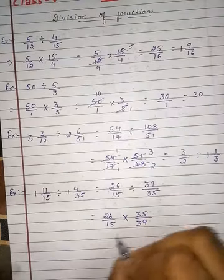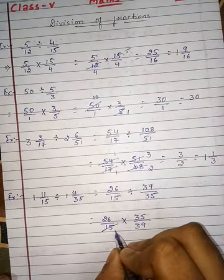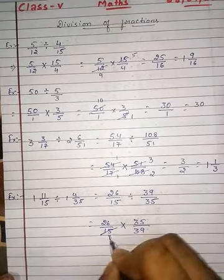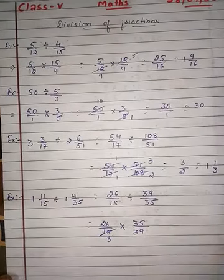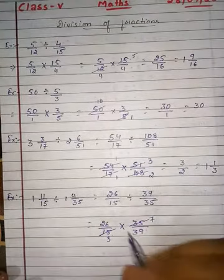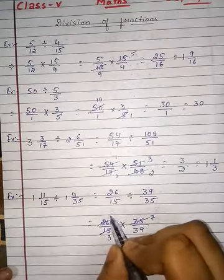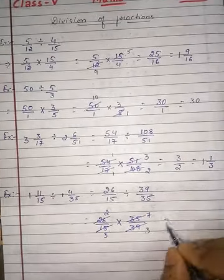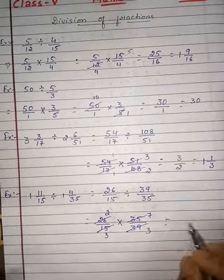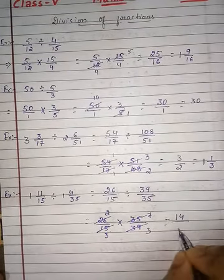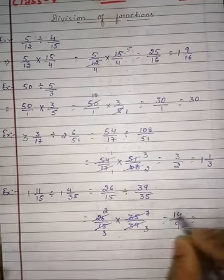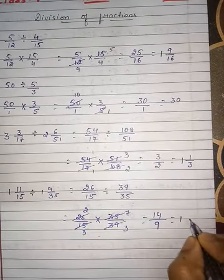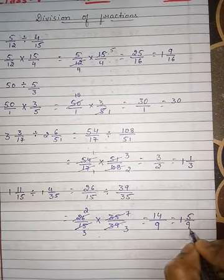अब numbers को divide करेंगे। 5 के table में 15, 3 times; and 35, 7 times. 13 के table में 26, 2 times; and 39, 3 times. अब divide नहीं होगा। So 2 into 7 is 14 and 3 into 3 is 9. ये improper fraction है, mix में convert करेंगे — यह आएगा 1 5 by 9.